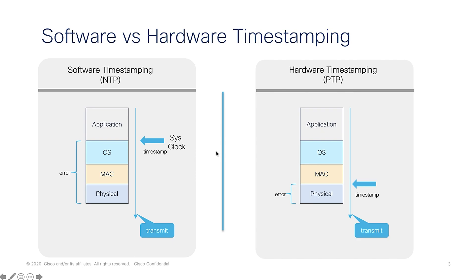The biggest source of error in network timing is often due to variations in queuing time in switches and routers. NTP does not have a solution for this, whereas PTP uses special switches and routers called transparent clocks or boundary clocks to solve this problem.